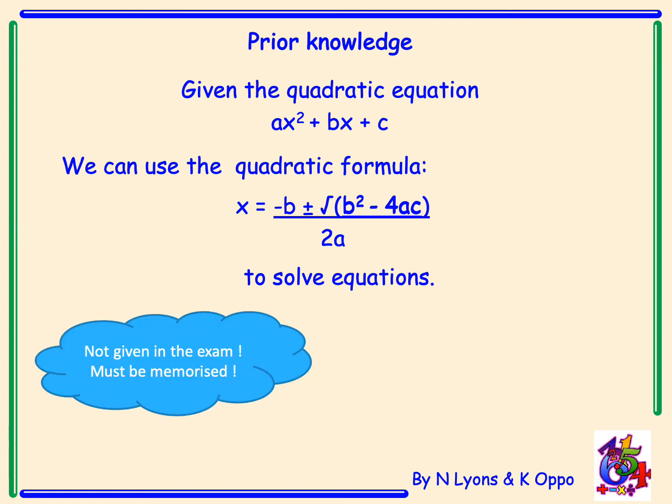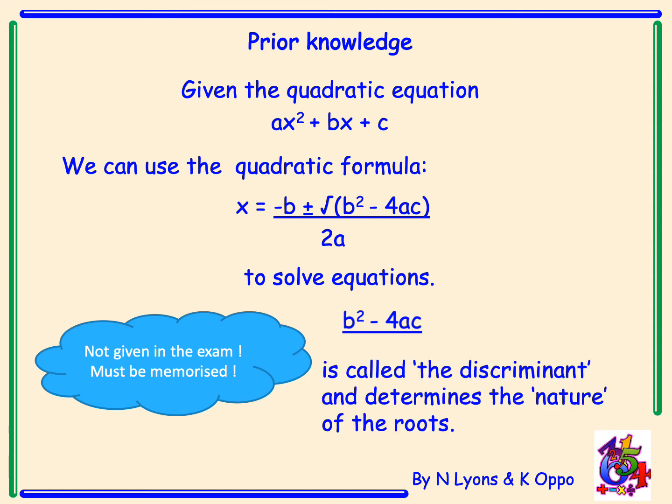Now, at higher level, this formula is not given in the exam, so you have to memorise it. Now let's look at what's underneath the square root. We have the term b squared minus 4ac, and that's what we call the discriminant. The discriminant is used to determine the nature of the roots.